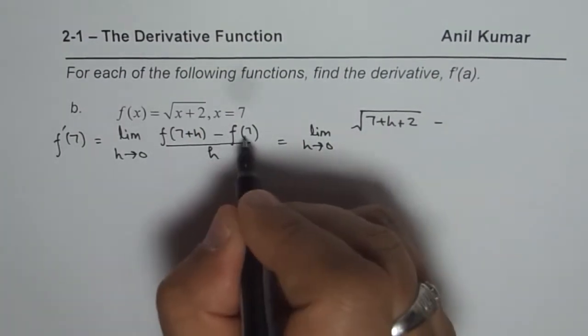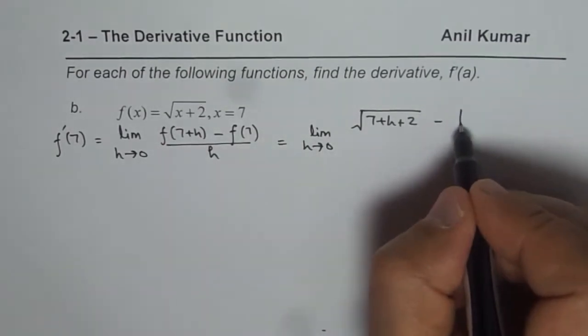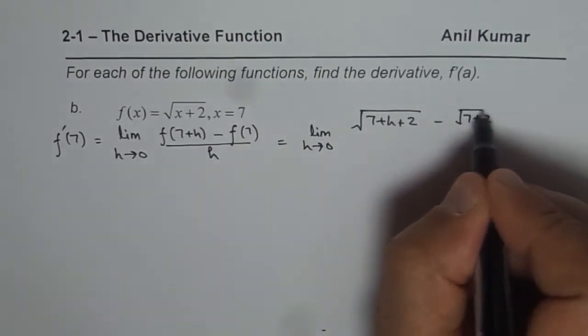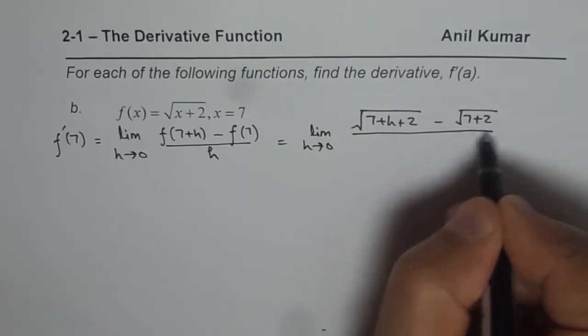Minus f of 7, so I will replace it by 7 which is square root of 7 plus 2, over h.